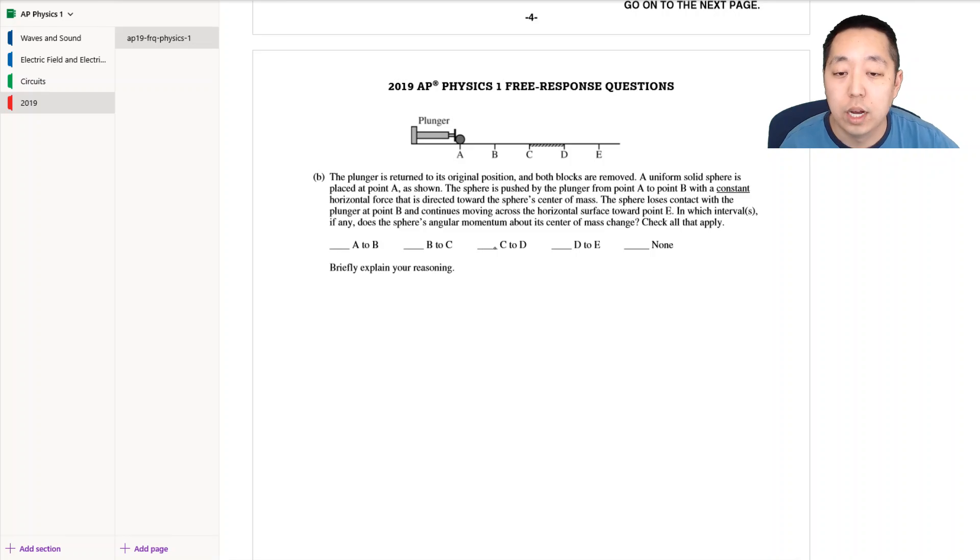In which intervals if any does the sphere's angular momentum about its center of mass change? So what can cause a change in angular momentum? Change in angular momentum has to be an impulse due to a torque. So because this is targeted at the center of mass, if I look at the free body diagram here I just have this force from the plunger. This would not cause a torque because it's acting at the center point of rotation, so at this point it would just simply slide along here and not rotate.